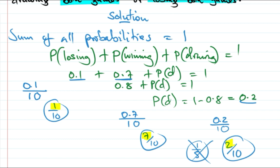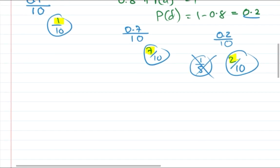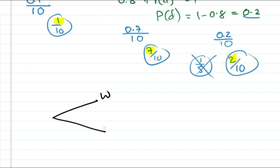We can solve this problem using tree diagrams. We have three outcomes: winning, drawing, and losing. Winning is 7 over 10, drawing is 2 over 10, and losing is 1 over 10.